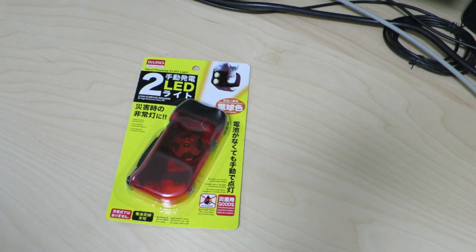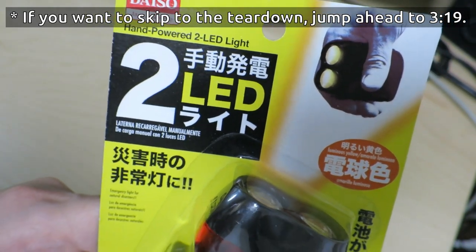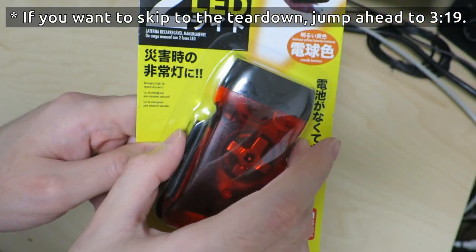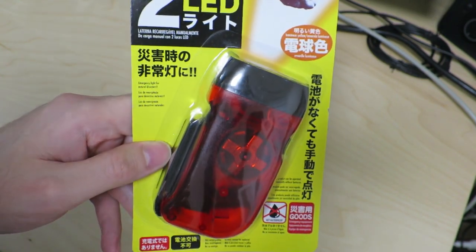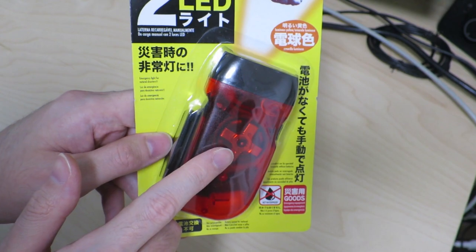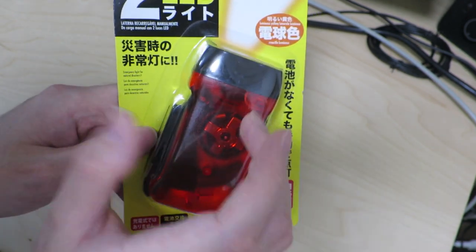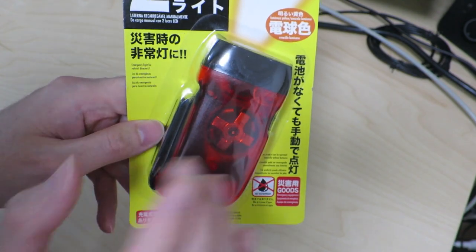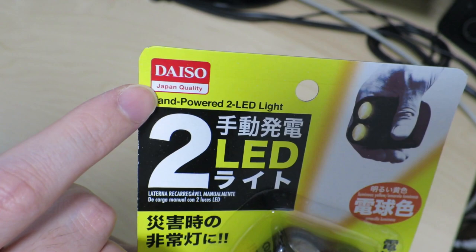Hi there, so today we'll be taking a look at this. This is a hand-powered 2 LED light, basically a hand-powered flashlight that you can use when you don't have access to batteries or electricity. Apparently this actually has a built-in battery, so even if you don't hand crank this or hand grip this, you can actually use this flashlight. This is an item I found at Daiso.